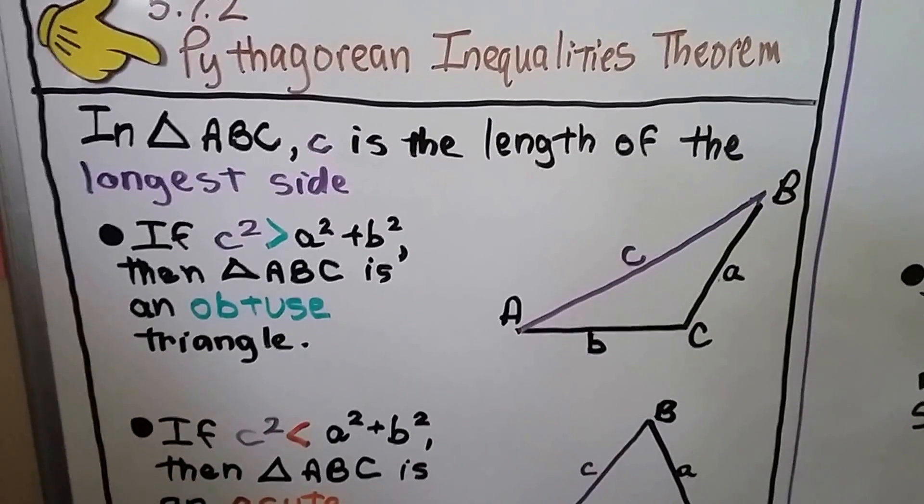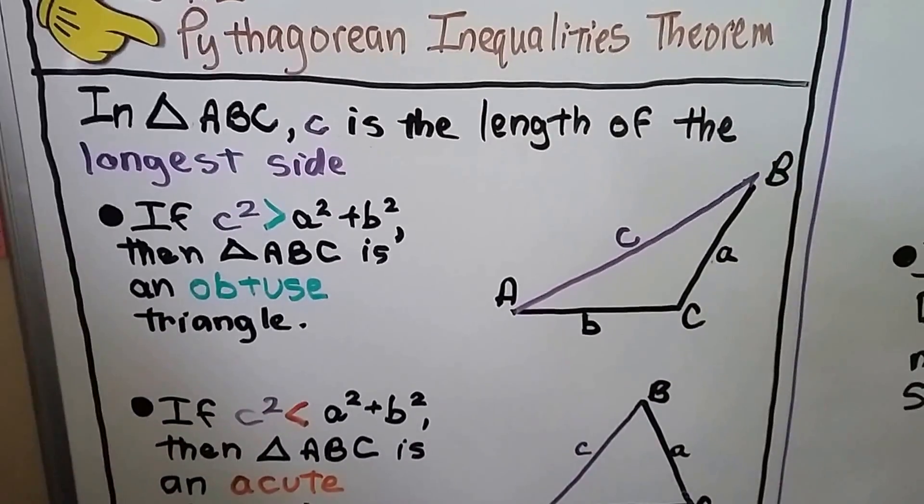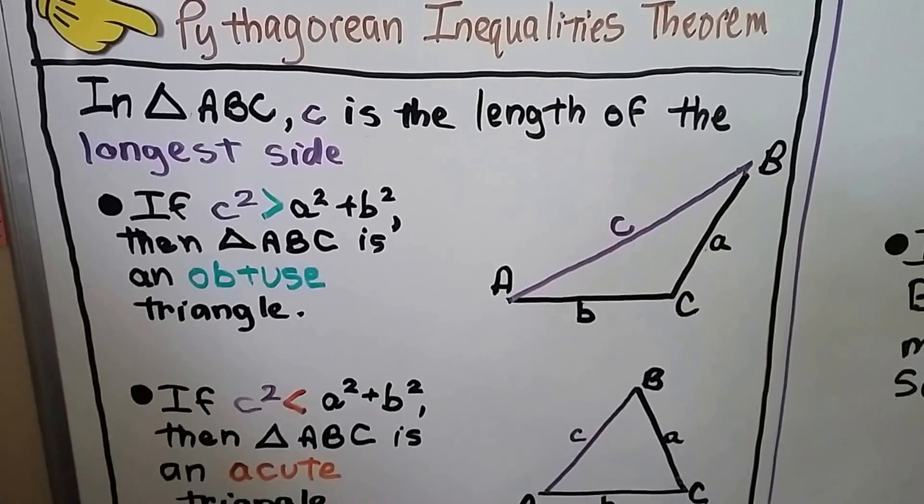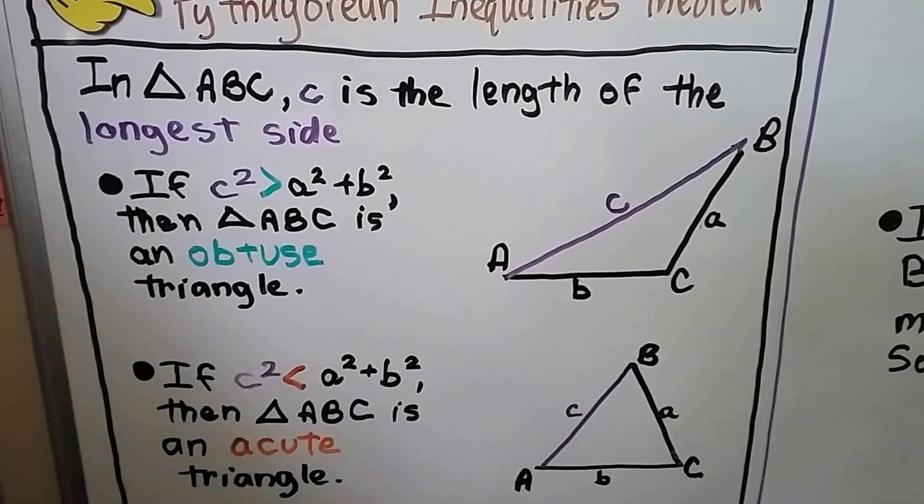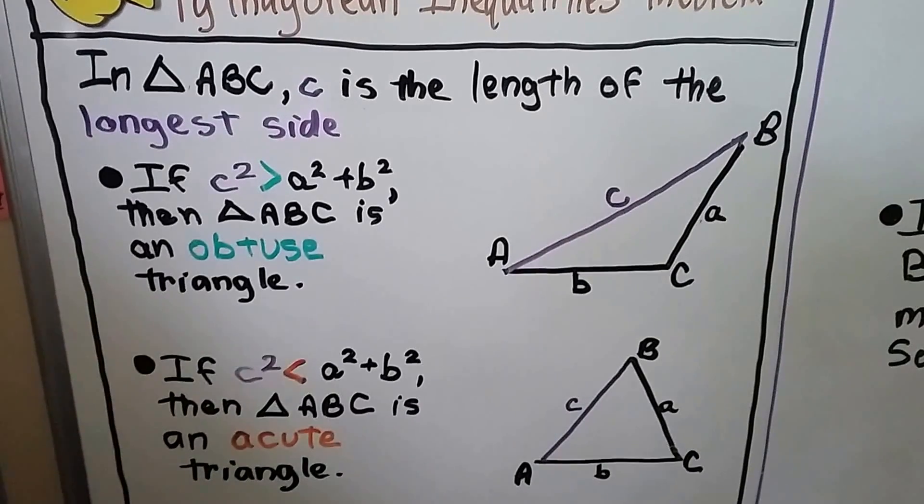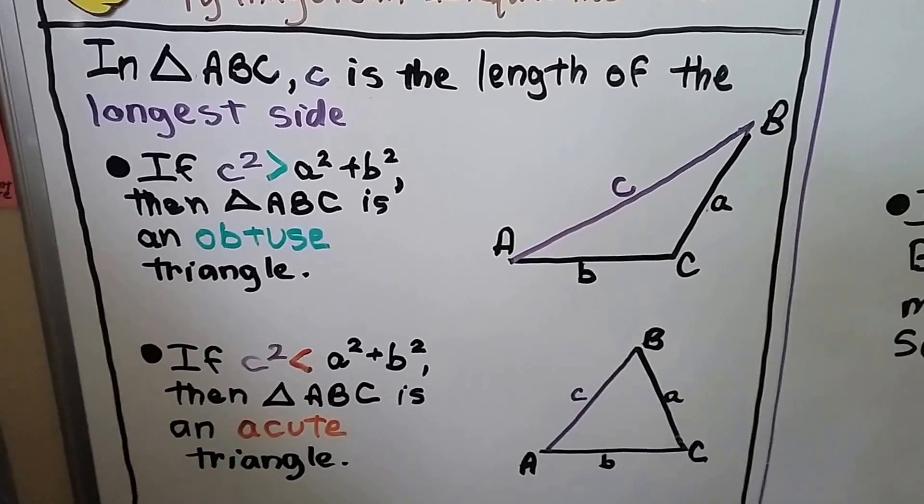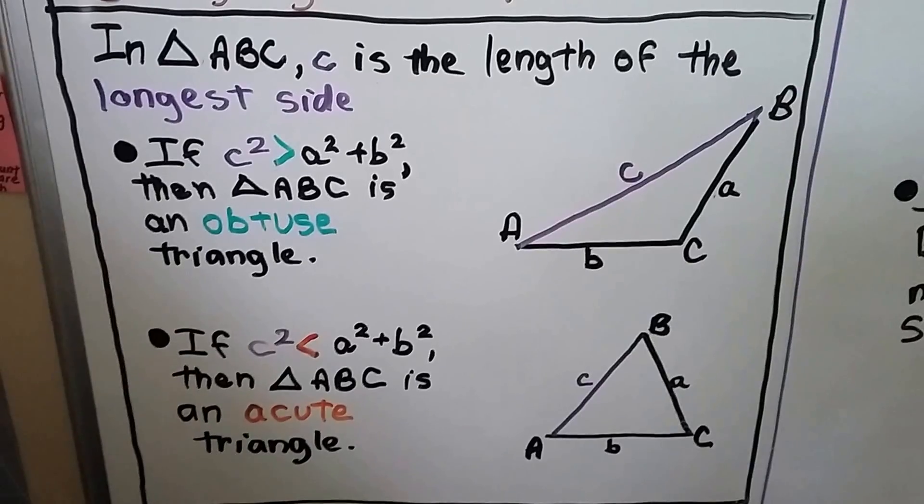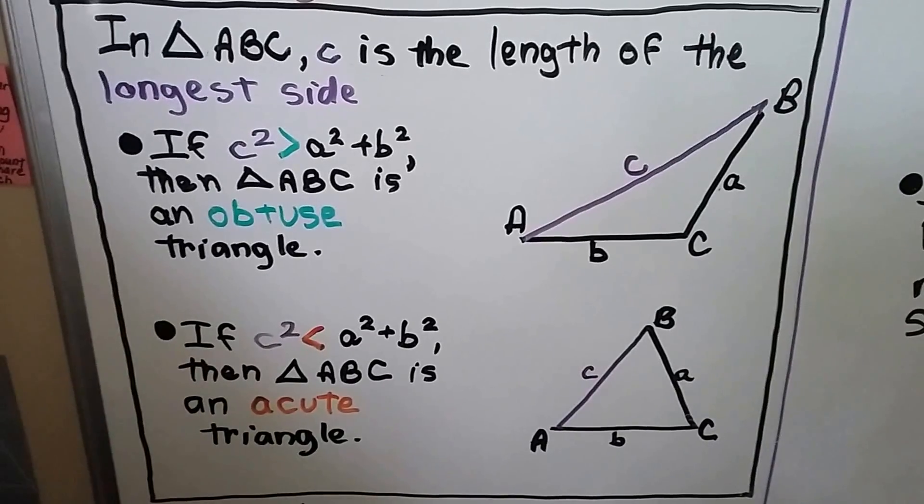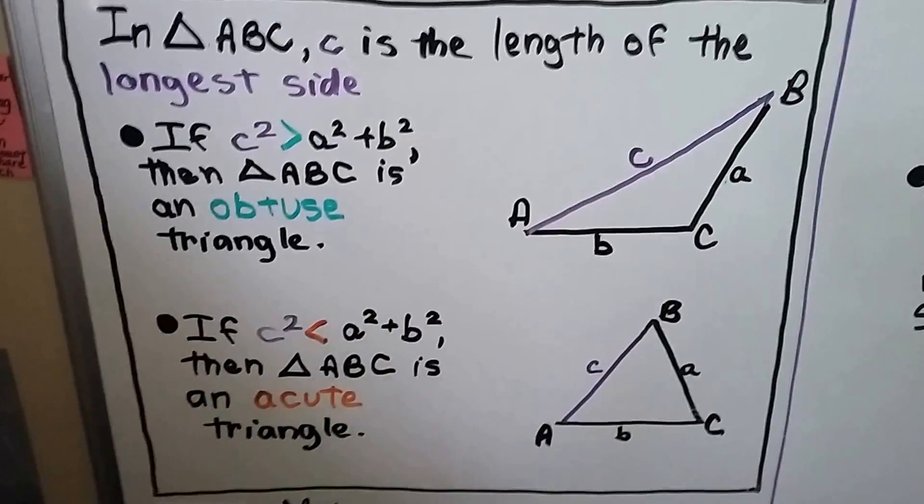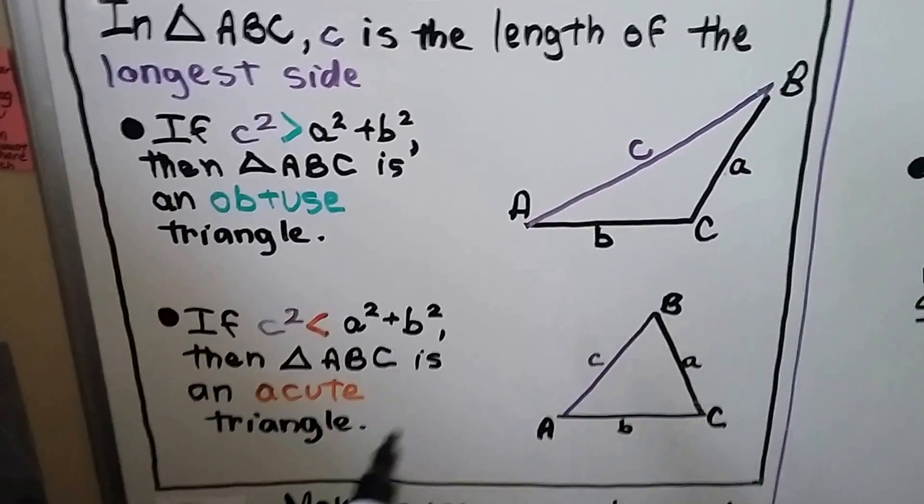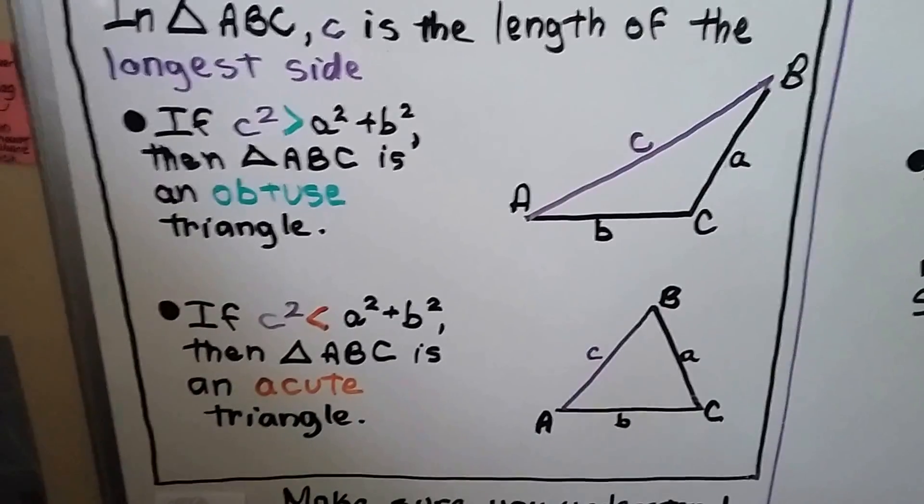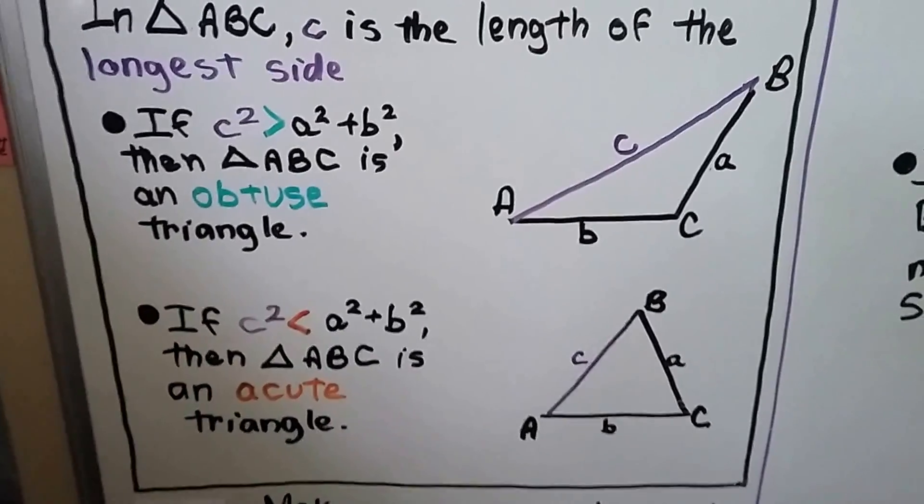Here's the Pythagorean Inequalities Theorem. It states in triangle ABC, c is the length of the longest side, the hypotenuse. If c² is greater than a² + b², then triangle ABC is obtuse. If c² is less than a² + b², then triangle ABC is acute.